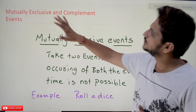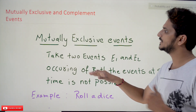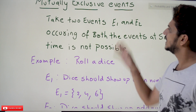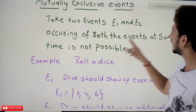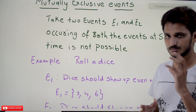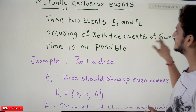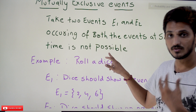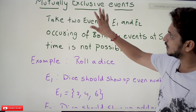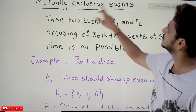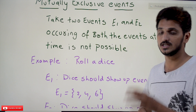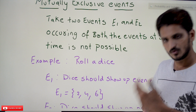Coming to today's class, we'll take an example and understand what mutually exclusive events and complement events mean. Mutually exclusive events: take two events E1 and E2. Occurring of both events at the same time is not possible. Most people confuse mutually exclusive events with independent events, which we will discuss in coming classes. So make it clear: mutually exclusive means occurring of both events at the same time is not possible.